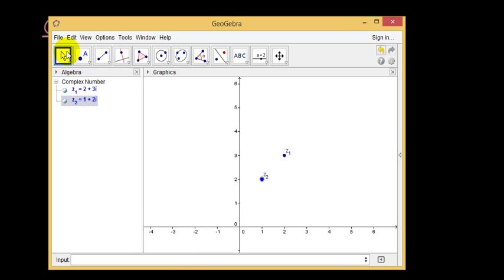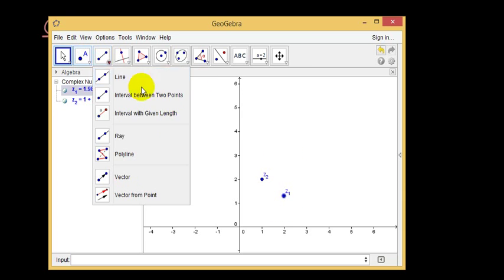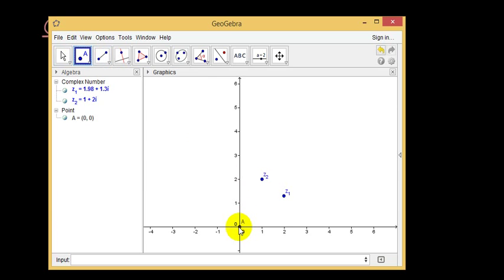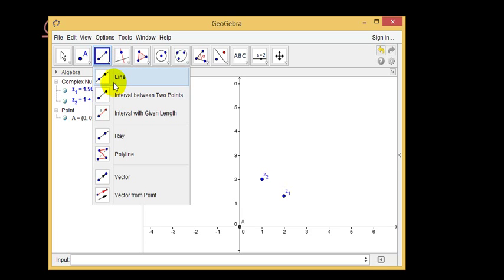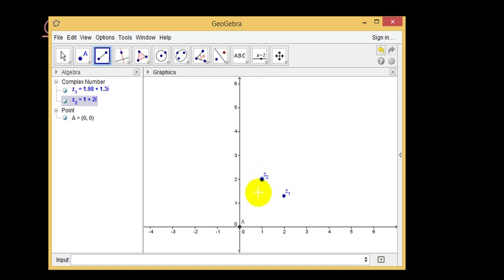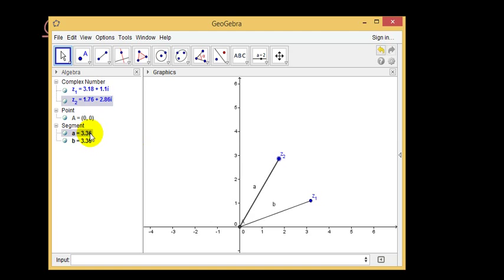I'm just going to drag the dots around a little bit. And I'm going to have a point at the origin so that I can get the magnitude of both of these complex numbers by drawing a line between the points. You can see the magnitude of z1 is b and the magnitude of z2 is a. Let's make it a bit different.